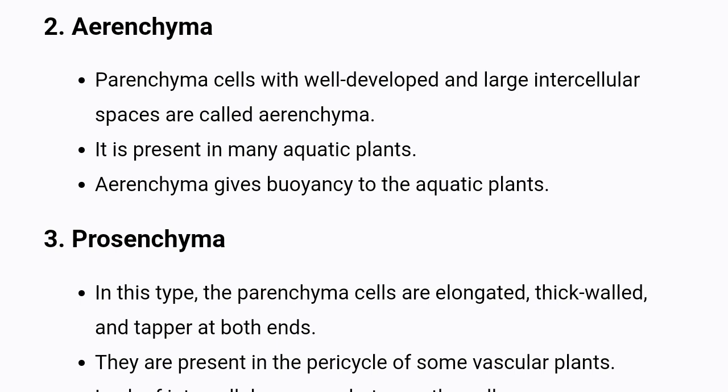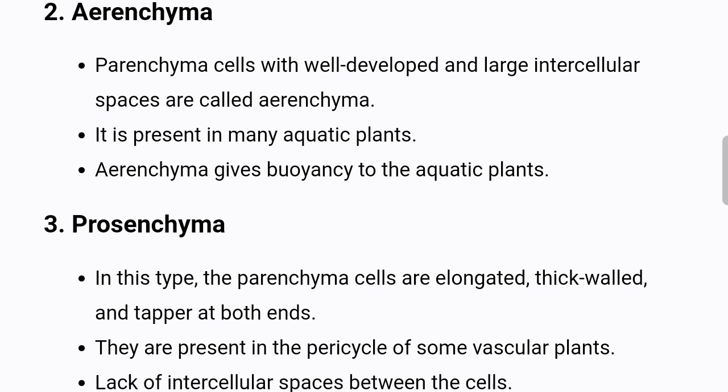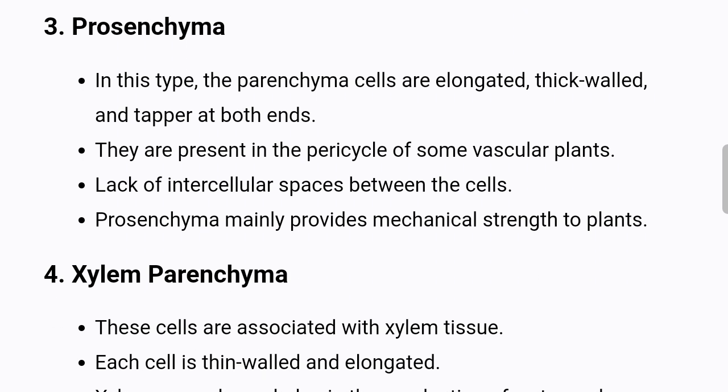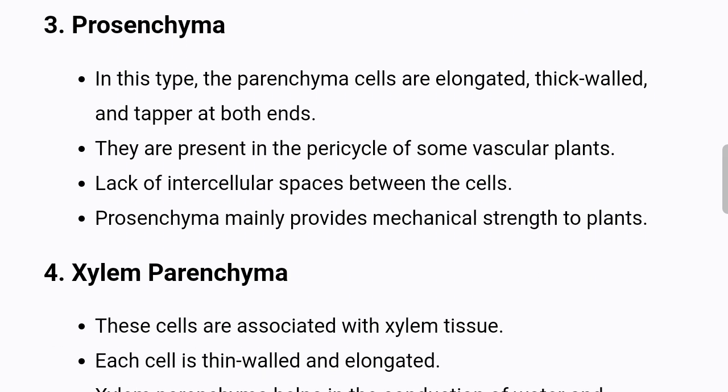Prosenchyma: In this type, the parenchyma cells are elongated, thick-walled, and taper at both ends. They are present in the pericycle of some vascular plants. There is a lack of intercellular spaces between the cells. Prosenchyma mainly provides mechanical strength to plants.